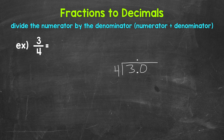So how many whole groups of 4 in 30? Well, 7. That gets us to 28. So the 7 needs to go above the zero, since we used that zero and thought of this as 30 divided by 4. So again, 7 above the zero there. That's going to line us up correctly. Now we multiply 7 times 4 is 28. Subtract: 30 minus 28 is 2.